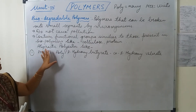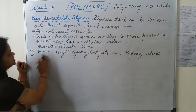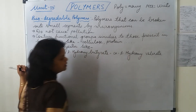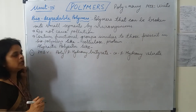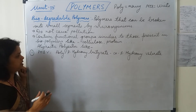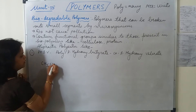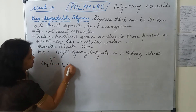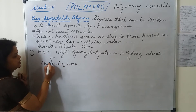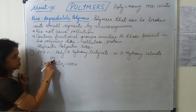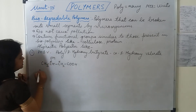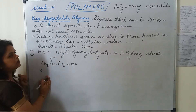The first one is PHBV, which is an aliphatic polyester. PHBV stands for poly-beta-hydroxybutyrate co-beta-hydroxyvalerate. It is actually a copolymer of two monomers: the first one is 3-hydroxybutanoic acid and the second one is 3-hydroxypentanoic acid. Let's write the structure here.